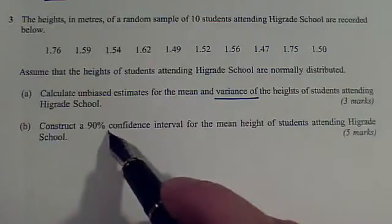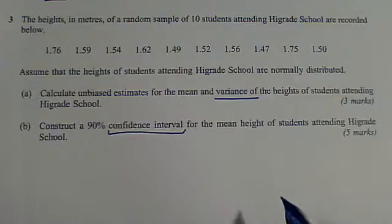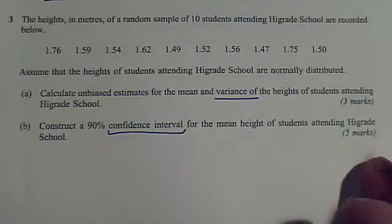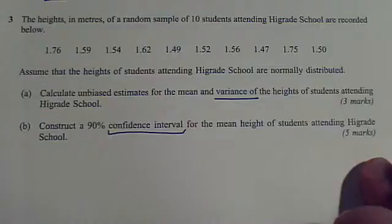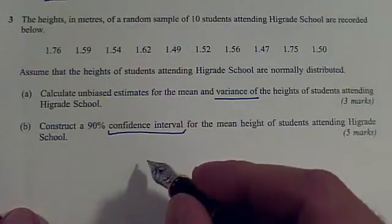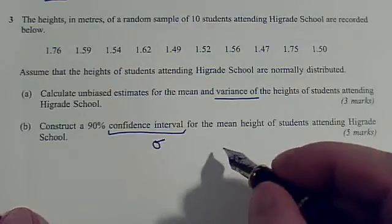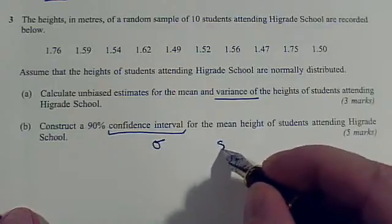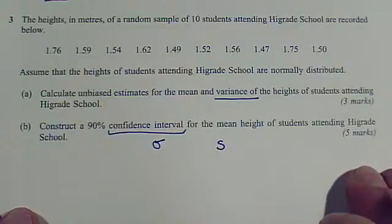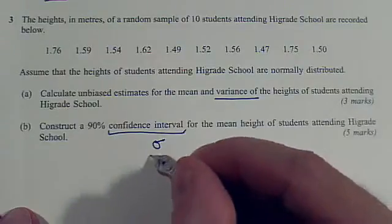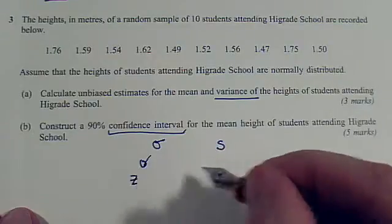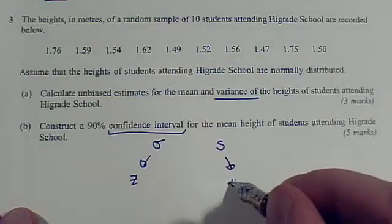Then we've got a confidence interval, and there are two kinds of confidence intervals. One is where you use a Z number, and the other is where you use a T number. The difference between the two is: are you using sigma, a population standard deviation, or are you using S, a sample-related standard deviation? Sigma gives you a Z; S, you need to use a T distribution.